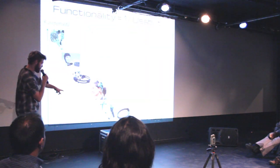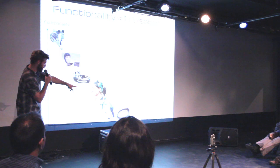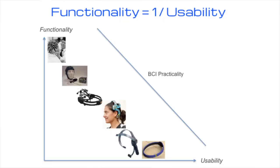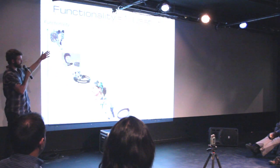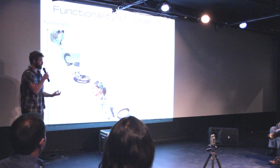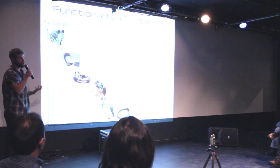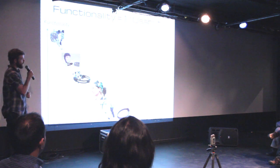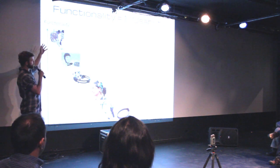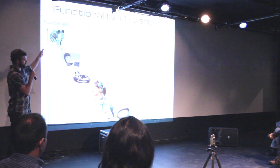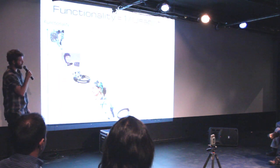This graph shows usability on the x-axis and functionality on the y-axis, with existing brain-computer interfaces ranging from research to commercial. My thesis is that brain-computer interfacing has not been pushed into the practicality range — all these units fall somewhere on the functional range or somewhere on the usability range, but not both.